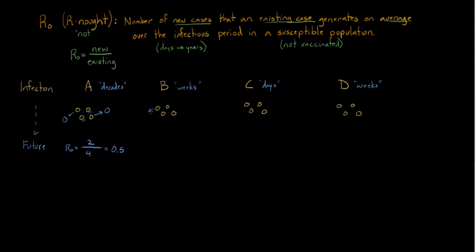What about B? In this one, you get two people over here. This person gives it to somebody and this person gives it to nobody. You count up the numbers and you have four divided by four equals one. It's an average, so even though some people gave it to more and some people gave it to less, the average is going to be one.